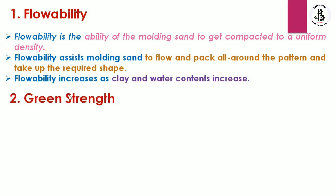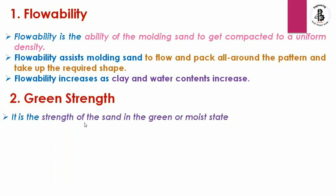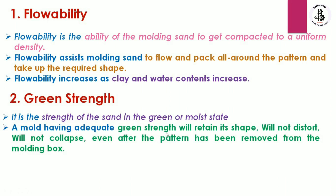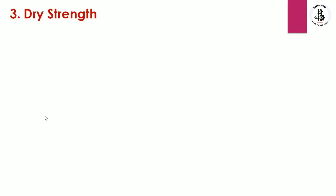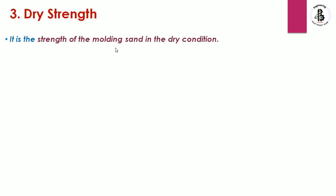Green strength is the strength of the sand in a green or moist state. A mold having adequate green strength will retain its shape, will not distort, and will not collapse even after the pattern has been removed from the molding box. Green strength helps in making as well as handling the molds, including moving them from one place to another.